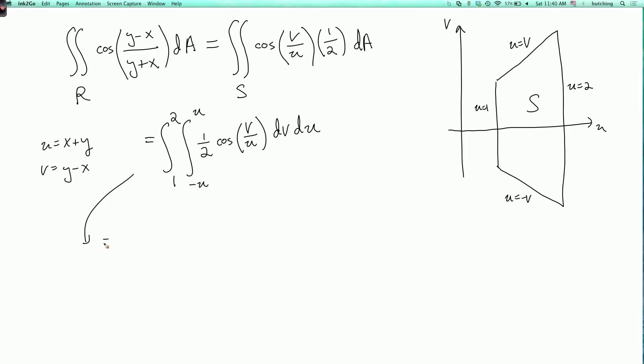And then the antiderivative of cosine of v over u, remember u is like a constant here, so we can take 1 half times u times sine of v over u. Because when I differentiate this, the u is like a constant, so it just pulls out of the sine. So in other words, I get 1 over u times this u, and then times cosine of v over u.